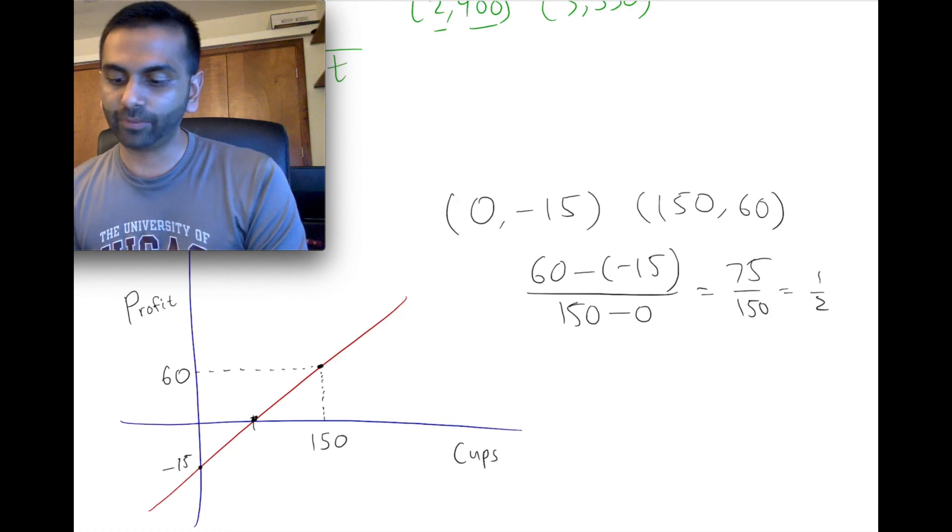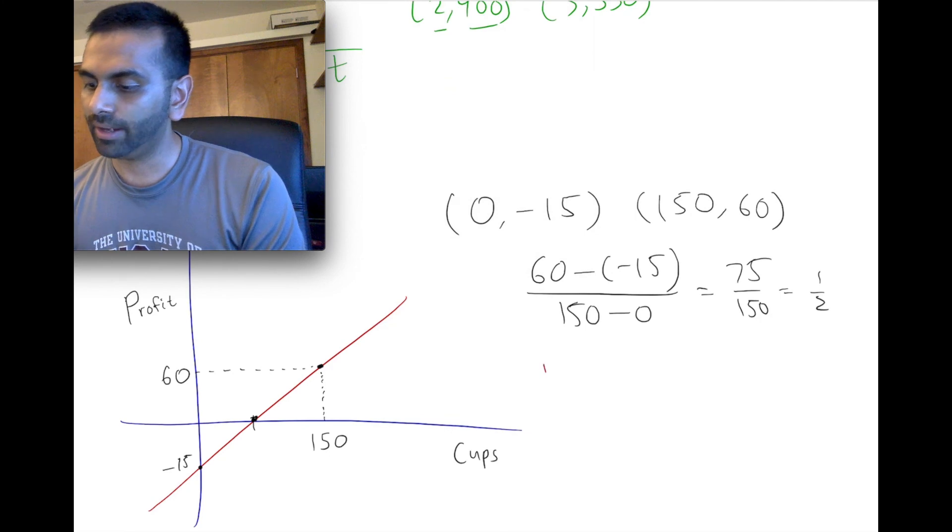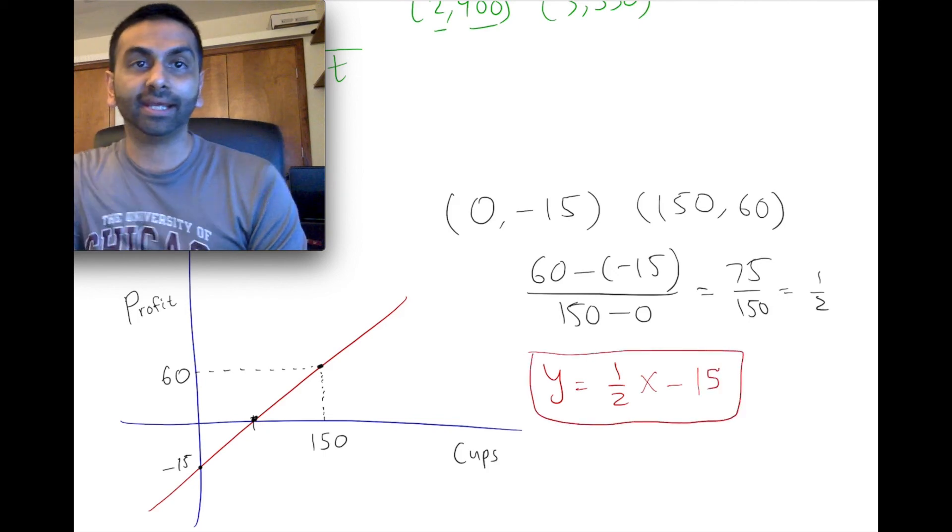So the slope is a half. And the Y intercept, we already know it, it's negative 15. So our equation is simply going to be Y equals one-half X minus 15. That's the equation representing the profits.